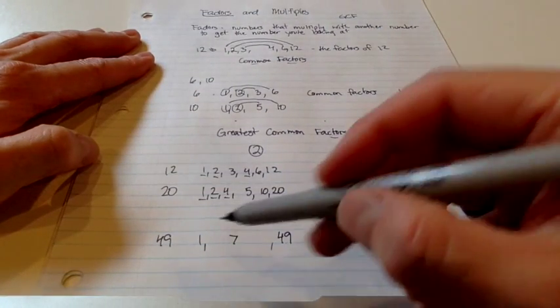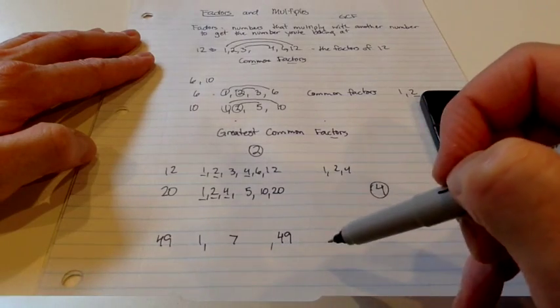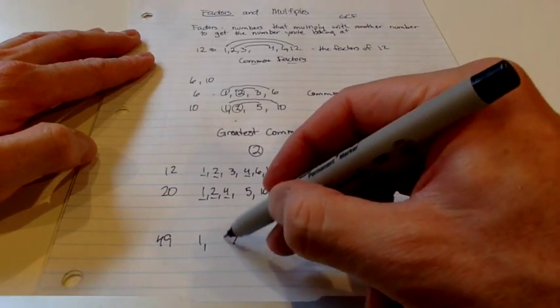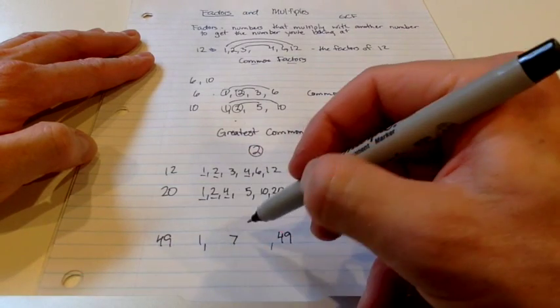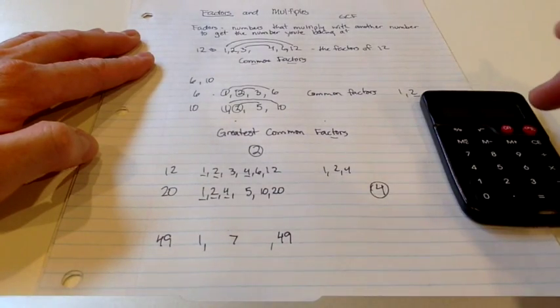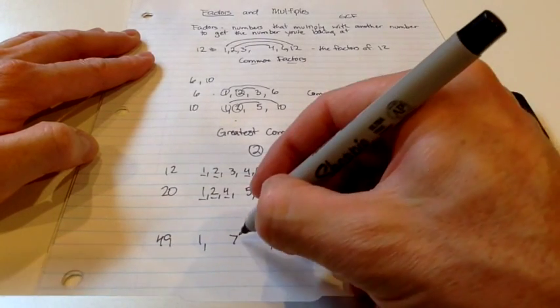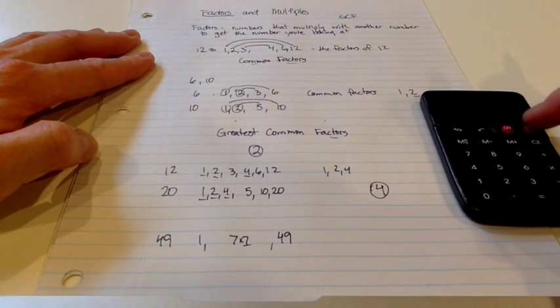So the factors of 49 are 1, 7, and 49. And I know I don't have to go any further, because 7 multiplies by itself to get 49. I don't need to go to 8, because I know that 8 will not go into 49, because I've already passed 7. I've passed the number that is multiplied by 7 in order to get to 49.